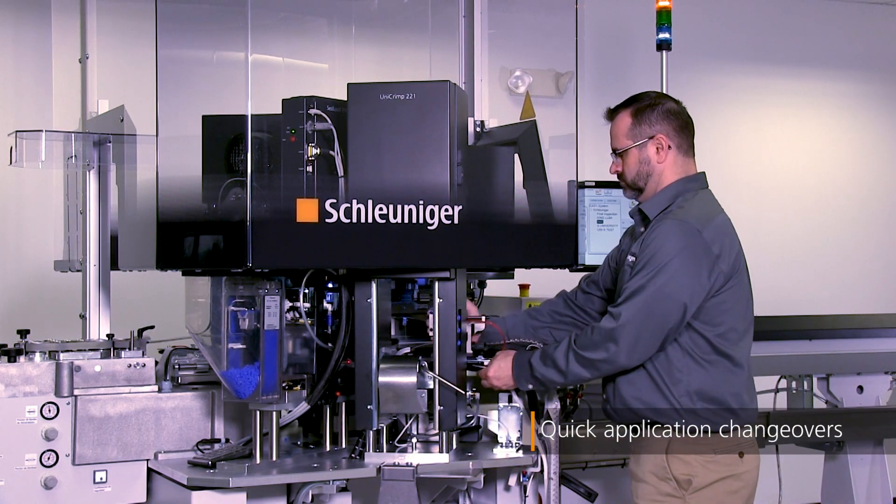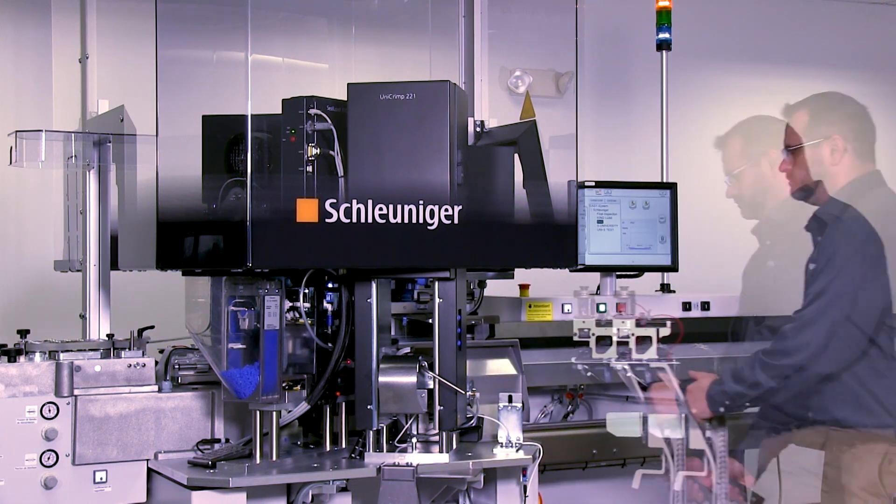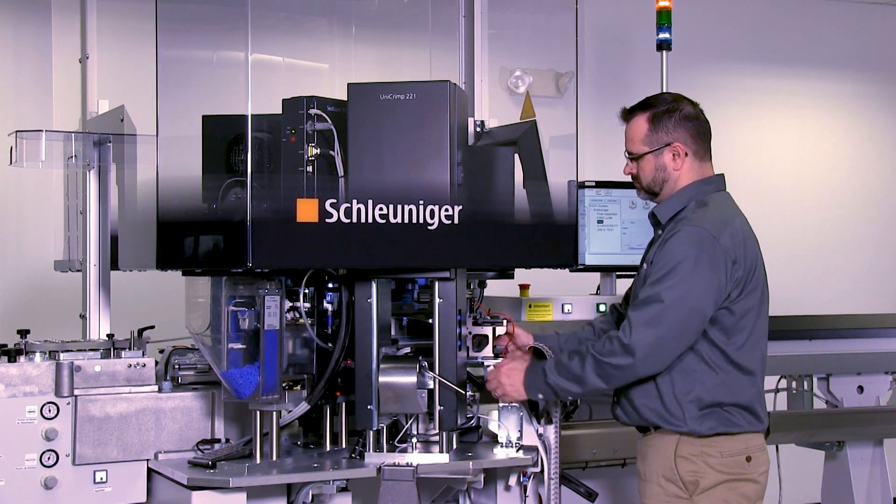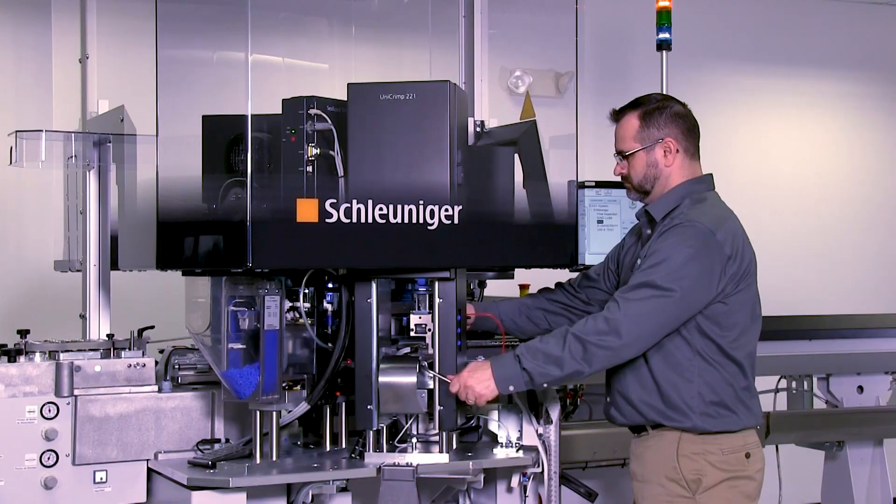Compatible with Schleuniger's innovative tooling shuttle system, applicator and terminal changes are minimized by combining the crimp applicator, terminal reel, and paper winder into one mobile unit, which can be set up offline.